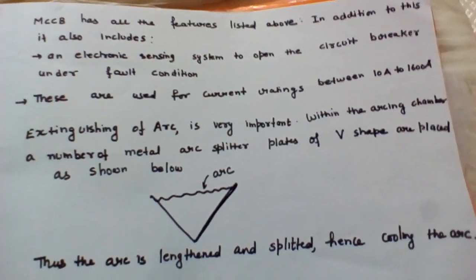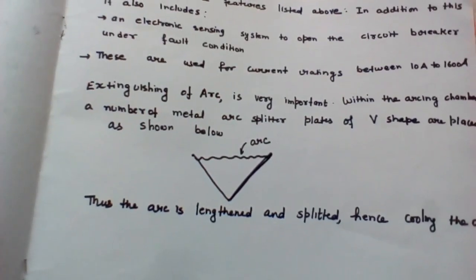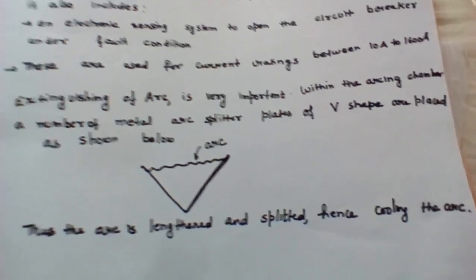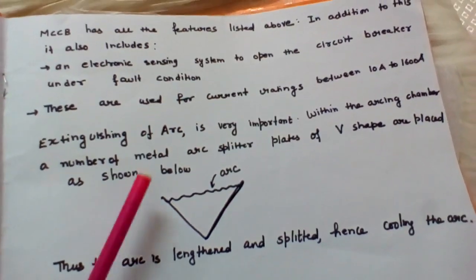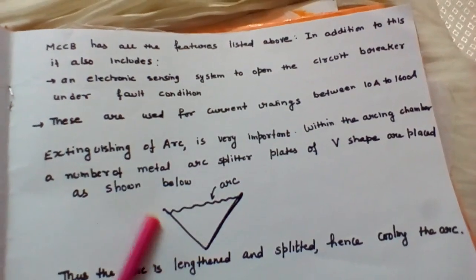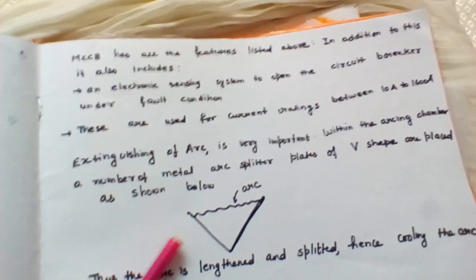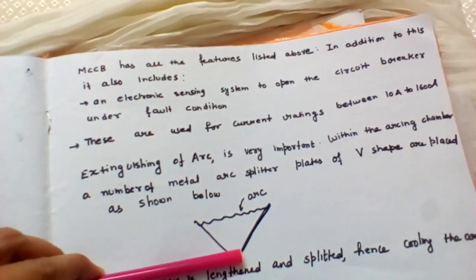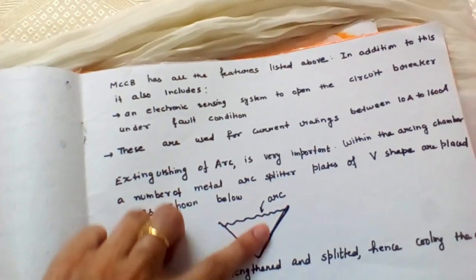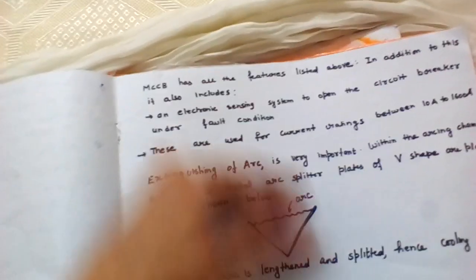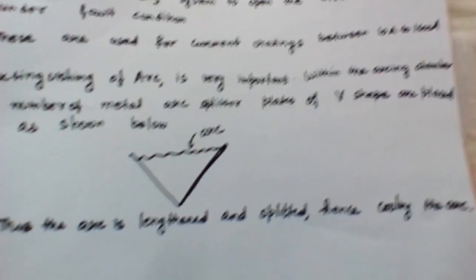In these low tension circuit breakers, we use a number of metal arc splitters inside the arcing chamber — the chamber where the arc takes place and is extinguished. The space between the contacts where the arc is initiated is known as the arcing chamber. The metal arc splitters are shaped like horns or a V-shape. When the arc is formed, it is dragged upwards between these V-shaped plates. The arc moves up and lengthens, and when there is a lengthening of the arc, there is an increase in resistance.